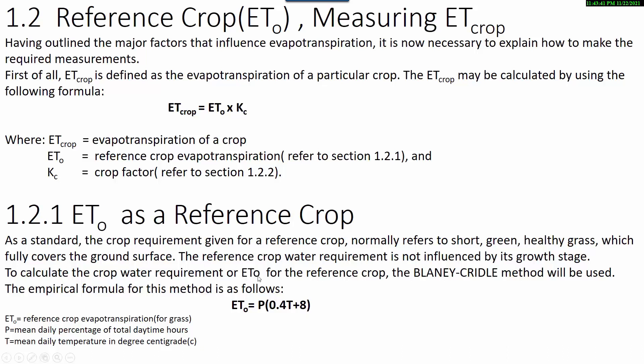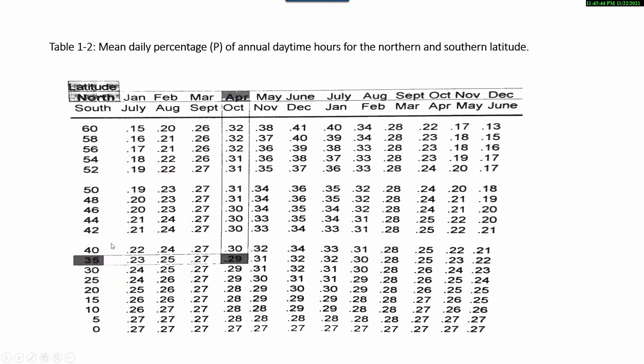The reference crop water requirement is not influenced by its growth stage. To calculate the crop water requirement or ETo for the reference crop, the Blaney-Criddle method will be used. The formula for this method is: ETo = p(0.46T + 8), where ETo is reference crop evapotranspiration for grass, p is the mean daily percentage of total daytime hours, and T is the mean daily temperature in degrees Centigrade.